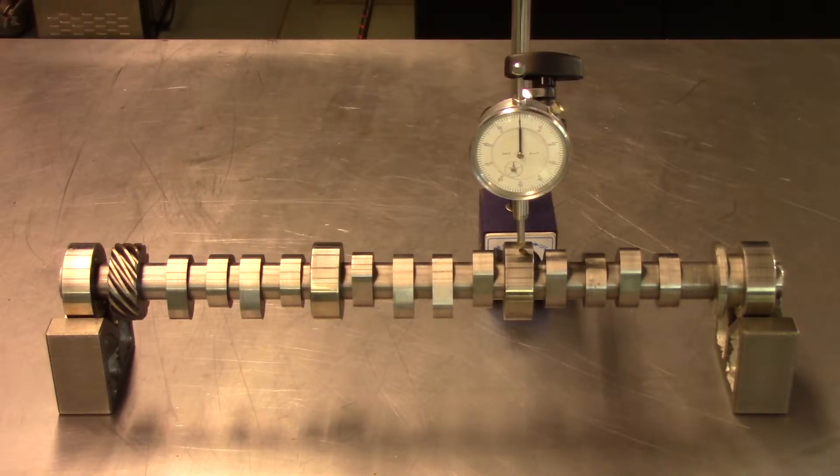Alternatively, it may be possible to do this measurement on overhead camshaft cylinder heads using the camshaft journal caps mounted upside down acting as V-blocks.